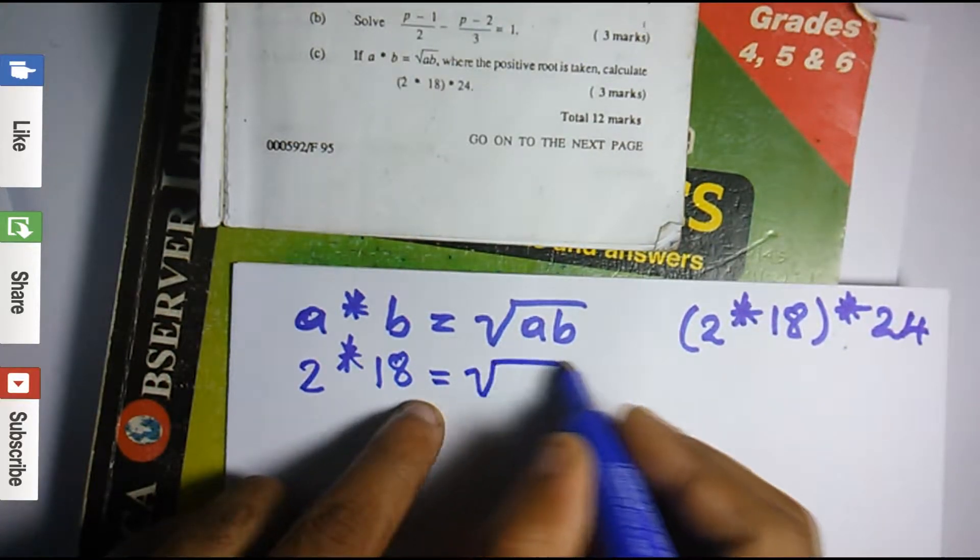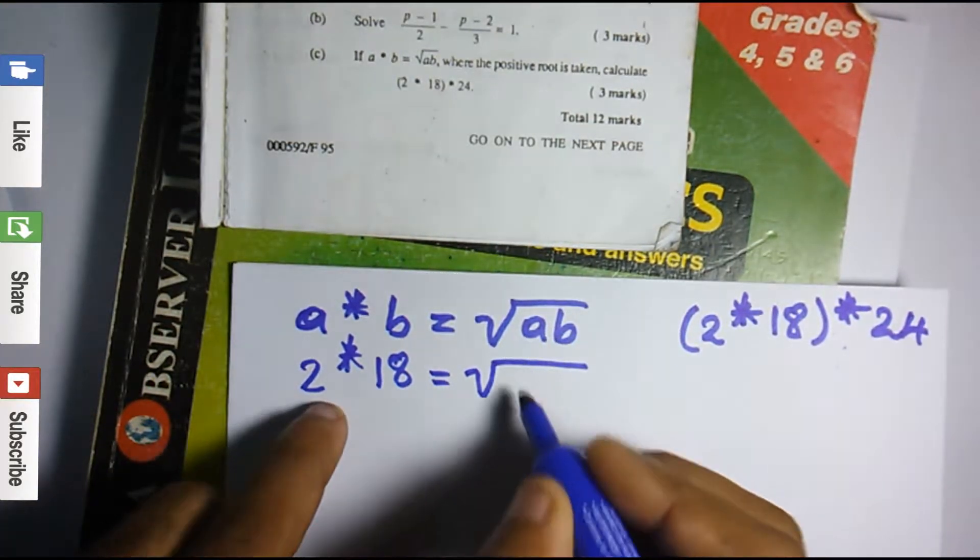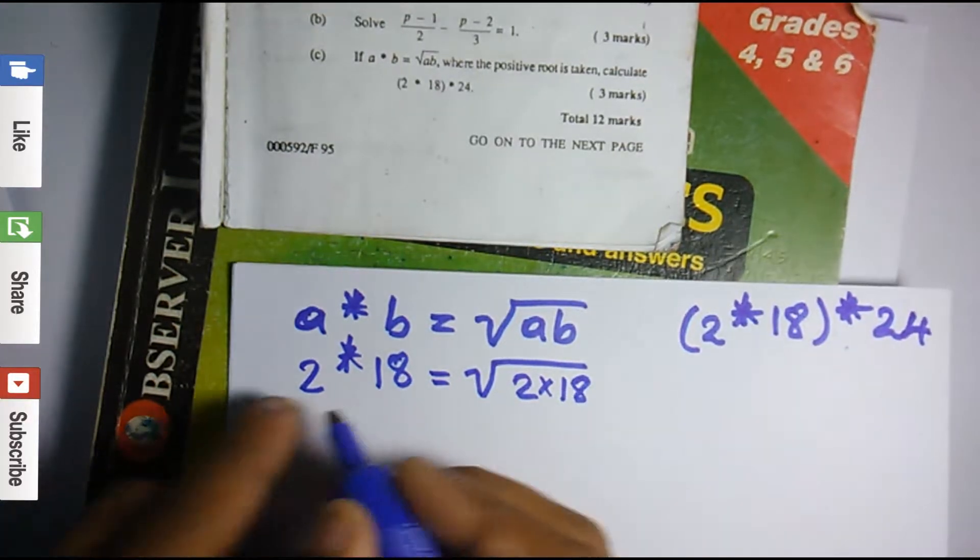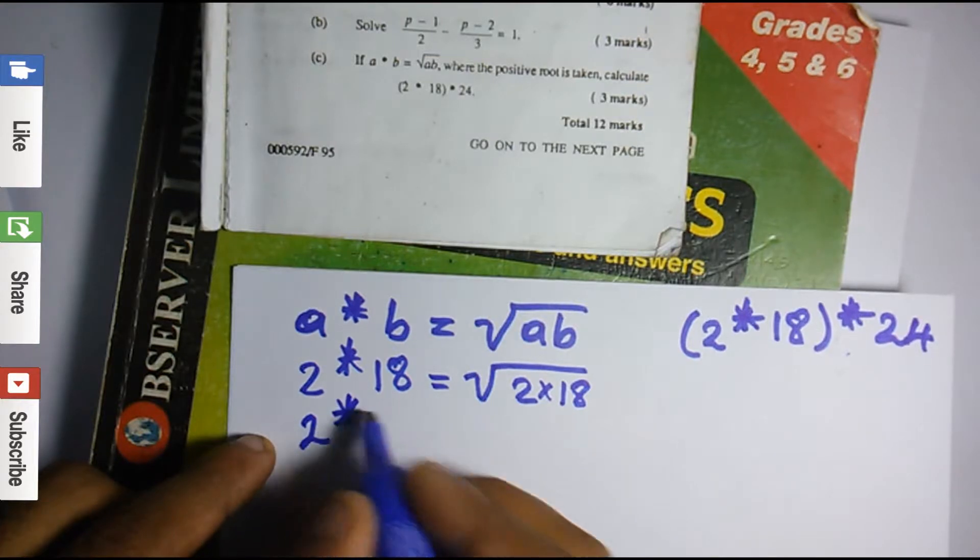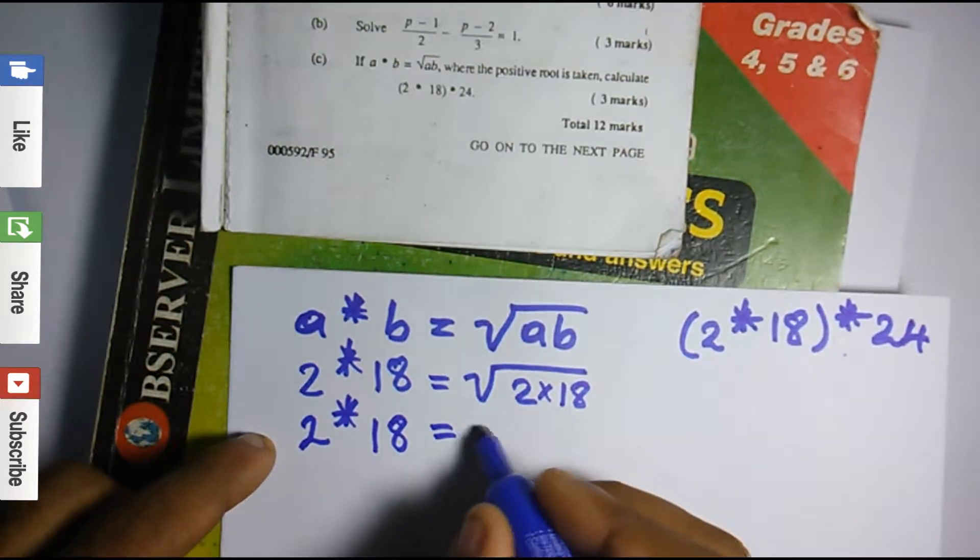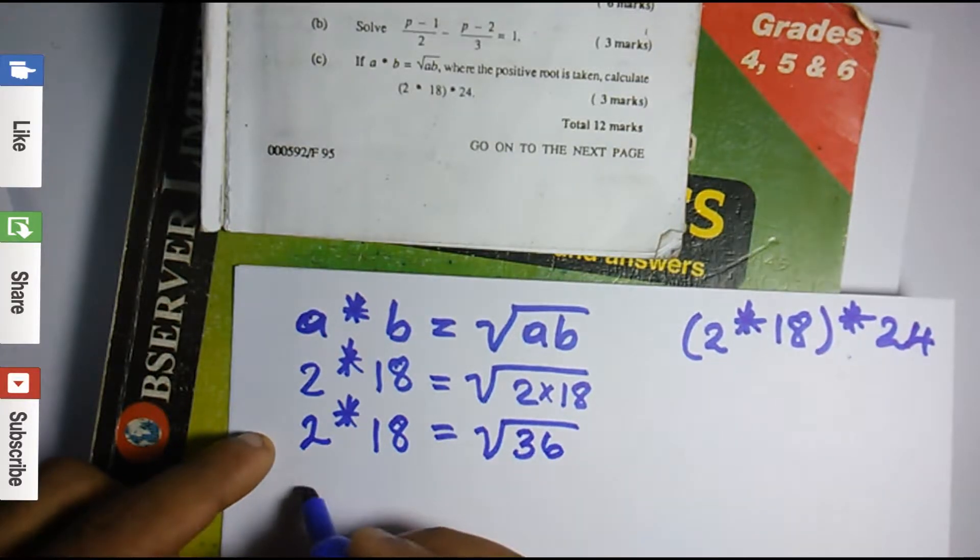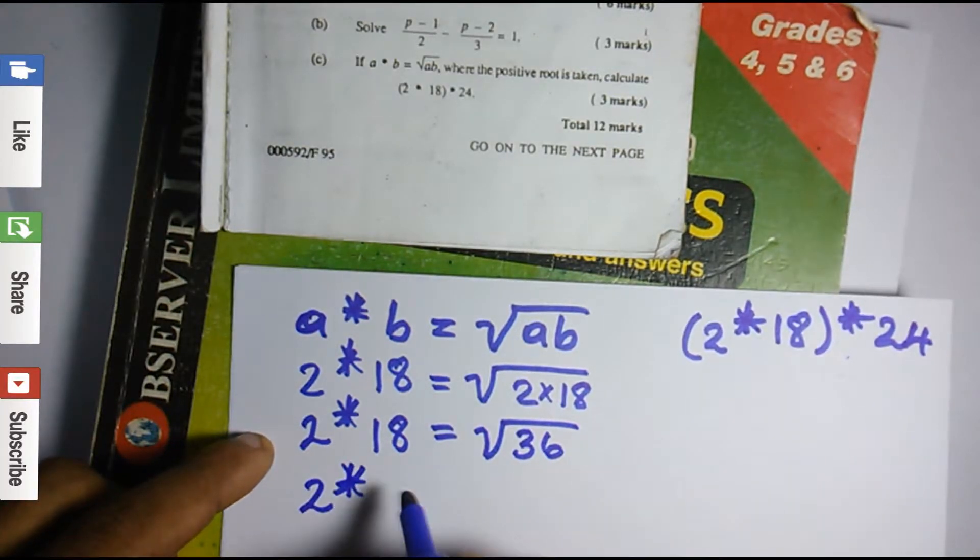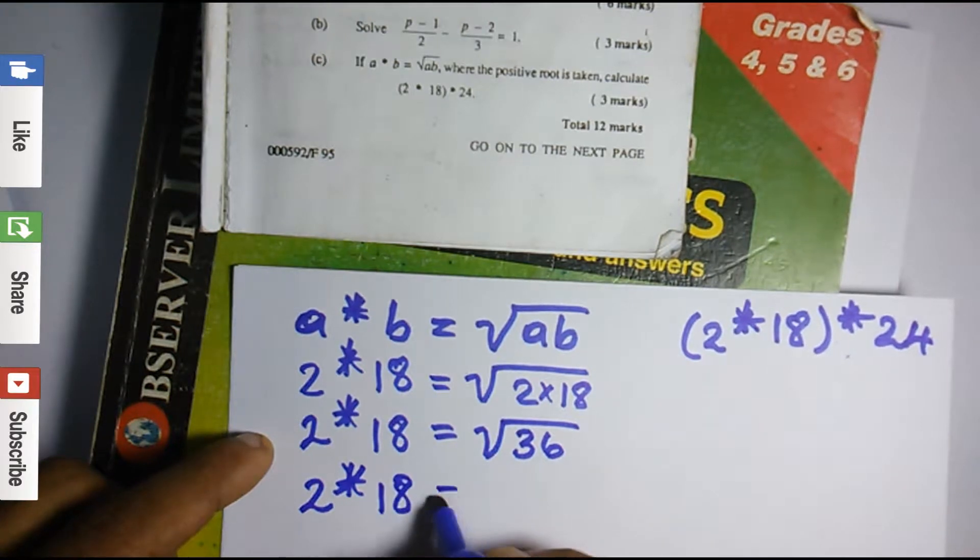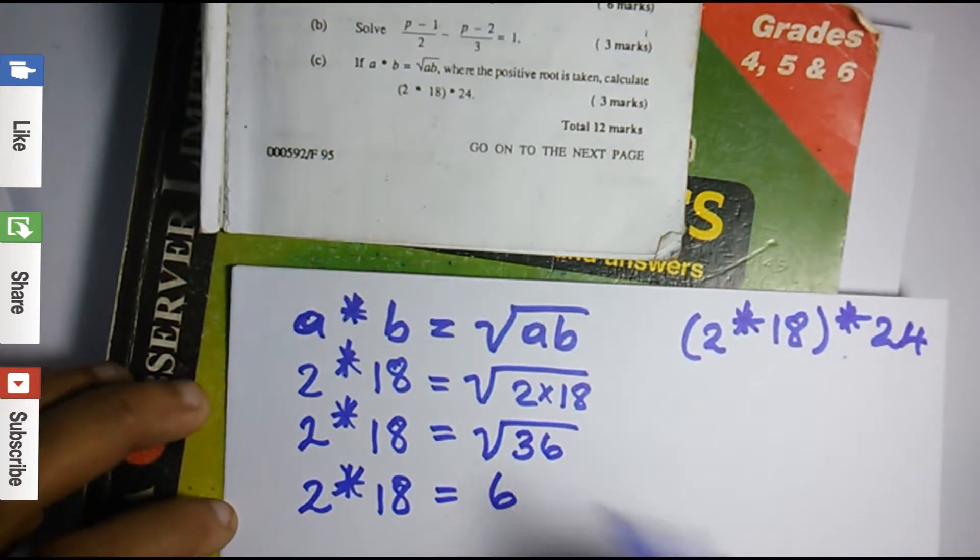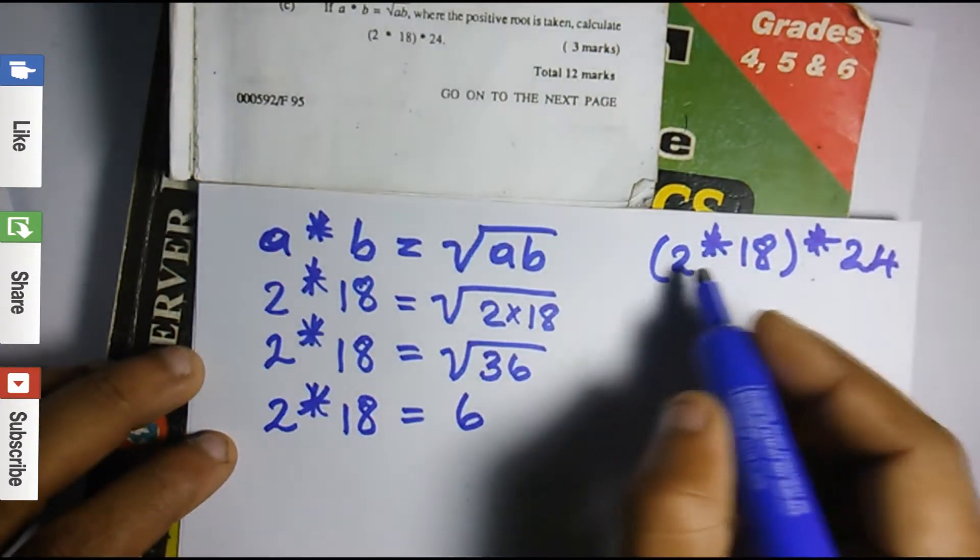So we're going to write the square root of a times b, which is in this case 2 times 18. So 2 asterisk 18 equals the square root of 2 times 18, which is 36. So 2 asterisk 18 equals the square root of 36, which is 6. So remember, this was the question.